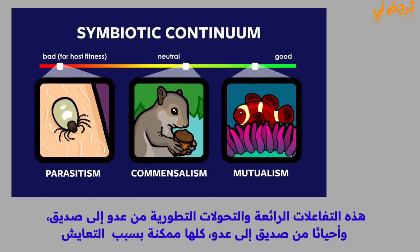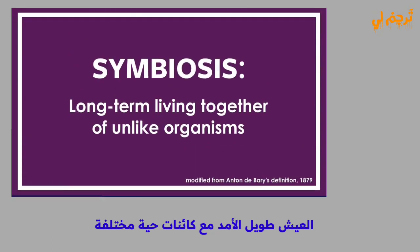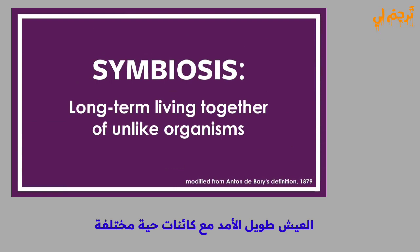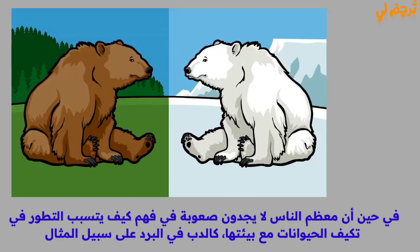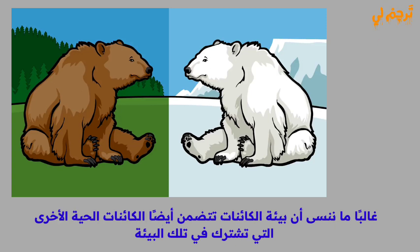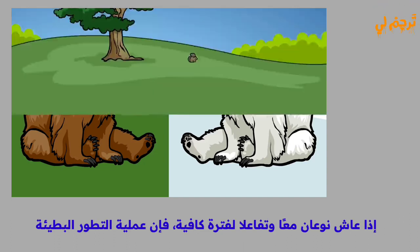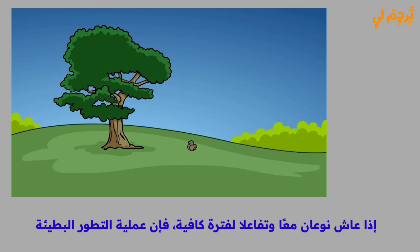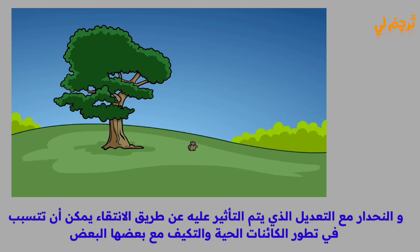These fascinating interactions and evolutionary transitions — from enemy to friend, and sometimes from friend to enemy — are all possible because of symbiosis: the long-term living together of unlike organisms. While most people have no trouble understanding how evolution causes animals to adapt to their environment, we often forget that a creature's environment also includes the other organisms that share that environment. If two species live together and interact long enough, the slow process of evolution — descent with modification acted upon by selection — can cause living things to evolve and adapt to each other.